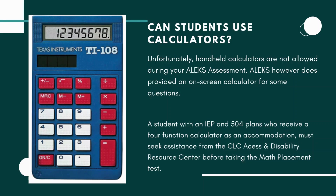A student with an IEP and/or 504 plan who, for example, requires a four-function calculator or other accommodations must first seek assistance from the CLC Access and Disability Resource Center before taking the math placement test. They will let you know that you need to complete an application and provide the appropriate documentation — either the IEP or 504 plan. They will review all that information and then contact you to discuss what accommodations you may need for the placement test, and later for the actual classes.